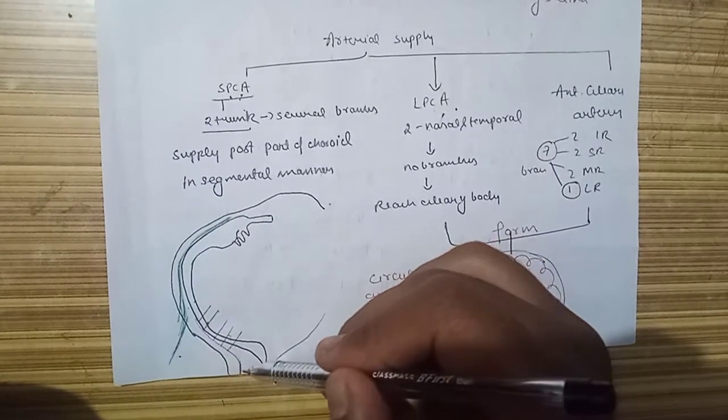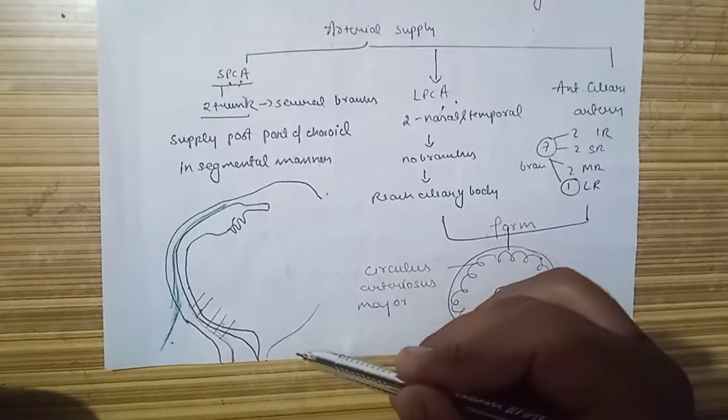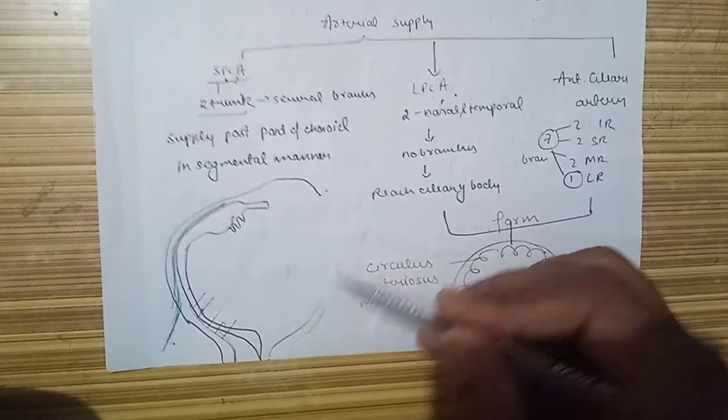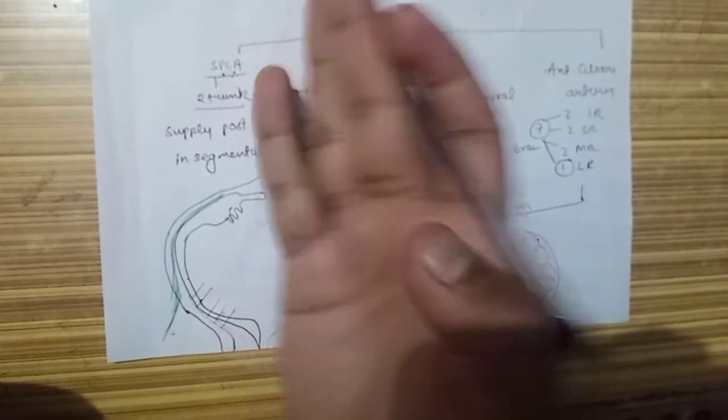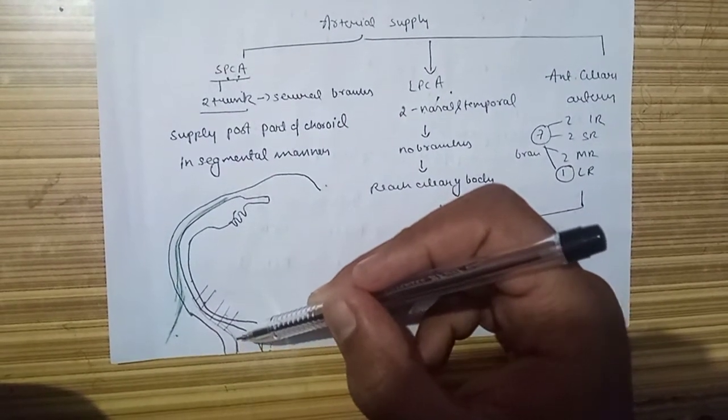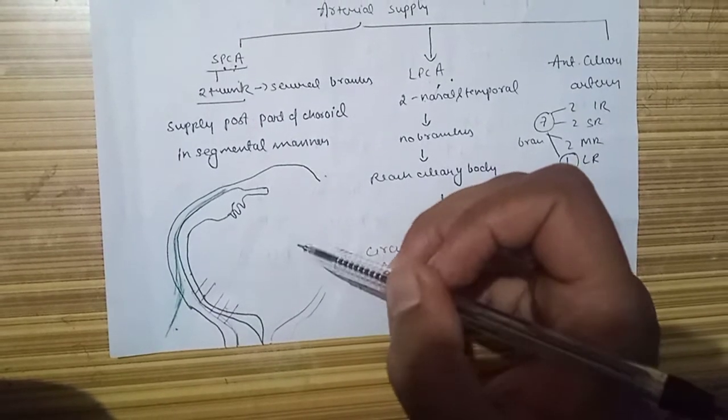It passes through the suprachoroidal space on both sides. Due to lack of space, I have only drawn one half of the eye. It travels through the suprachoroidal space up to the vortex on both sides.